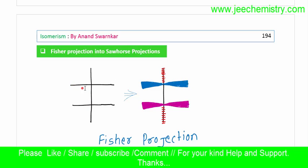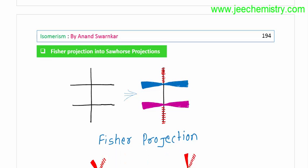Now we know that this is a horizontal line. This is a wedge line. This is a vertical line. This is a dash line. This is a dash and this is a wedge. Now two wedges are shown. And this is a dash, vertical as it is. This is the numbering of the carbon chain — actually this is a straight chain carbon chain.